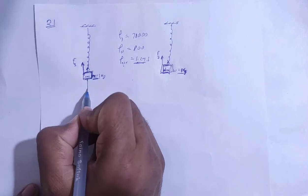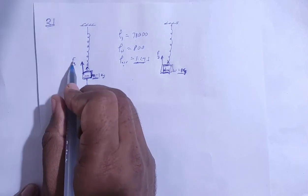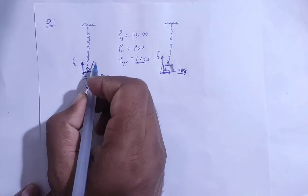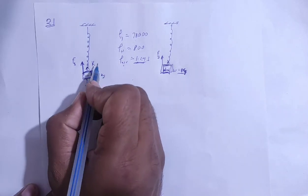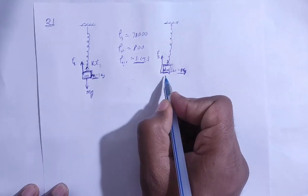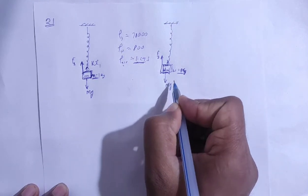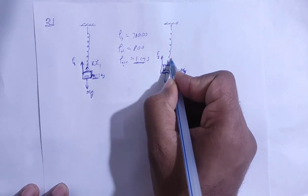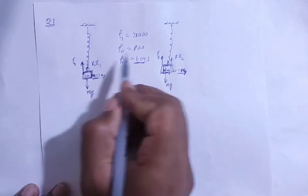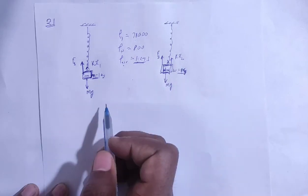The downward force is mg and the buoyant force acts upward due to displaced air. The spring's restoring force is kx1 for iron and kx2 for wood. Both use the same spring with the same spring constant, but the elongation is different.